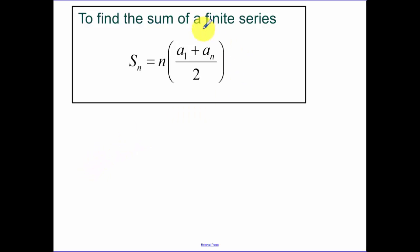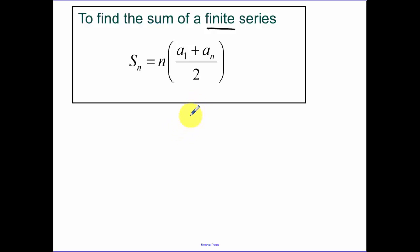To find the sum of a finite series — finite means it has an nth term — the formula is: the number of terms times the average of the first and last term. So the sum of n terms equals n times the quantity a sub 1 plus a sub n, all over 2.